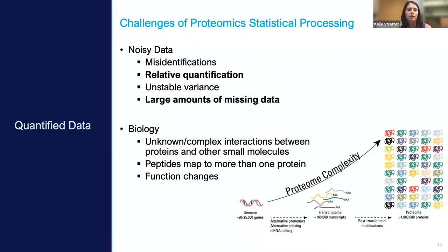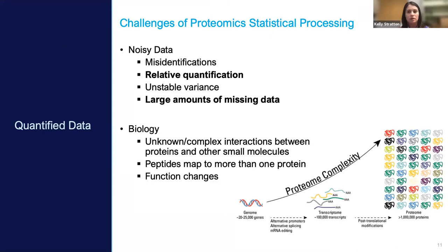With proteomics data in particular, there are a number of challenges important to keep in mind because they impact the choices we make throughout our analyses. We're working with relative quantification data, so we can't just make comparisons between samples out of the box. We're also doing bottom-up proteomics, starting with measurements at the peptide level and rolling up to proteins. For label-free proteomics there's often a lot of missing data, and on top of these data challenges there's also the complexities of biology.